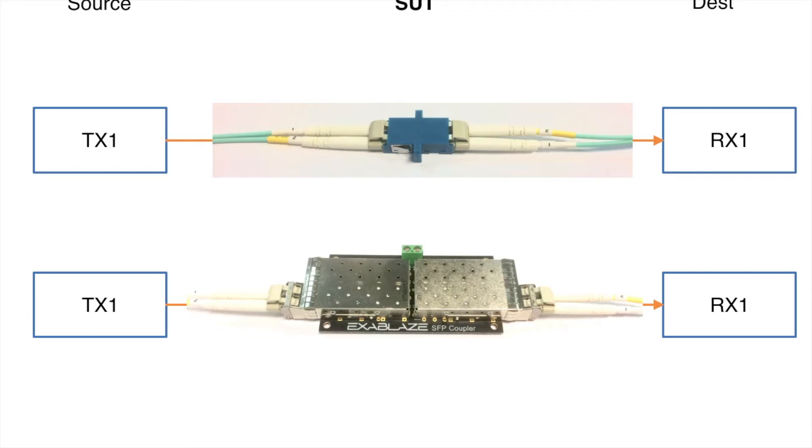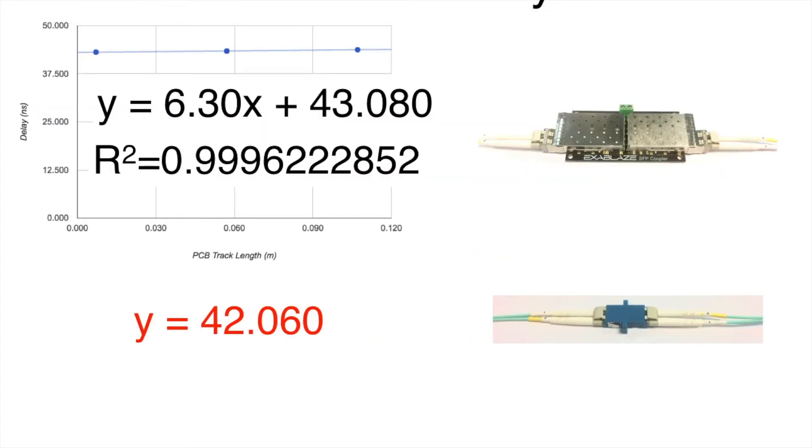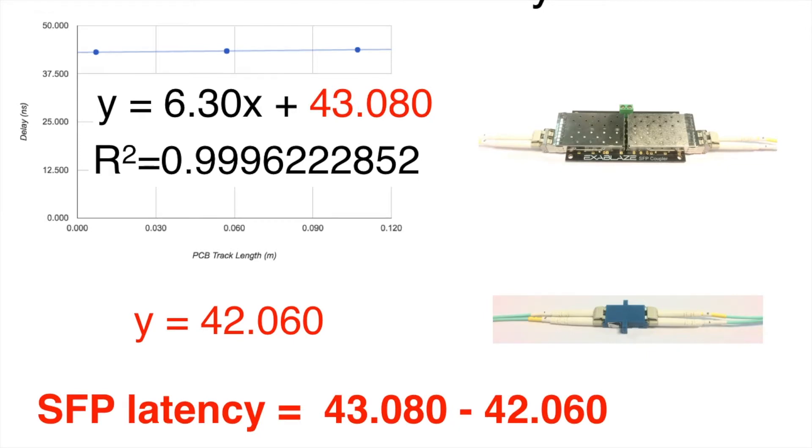By doing so, we can plot a curve, and that curve has a y-intercept, and we can then subtract those two y-intercepts to find out what the latency is through the SFPs. And so by doing so, we get a latency of about 1.02 nanoseconds.